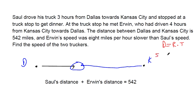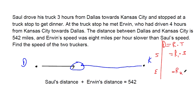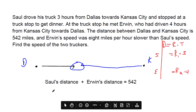Saul's distance is going to be Saul's rate, which I'll call R sub 1, because there are two different rates. He's driven at R sub 1 for three hours. Erwin's distance is going to be Erwin's rate, R sub 2, times four hours. Adding those two distances together should equal 542 miles.